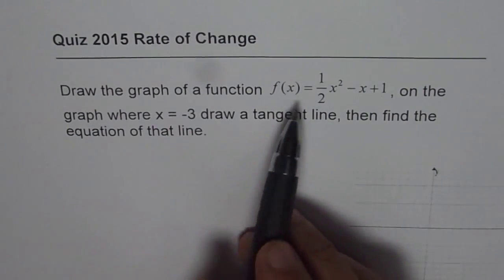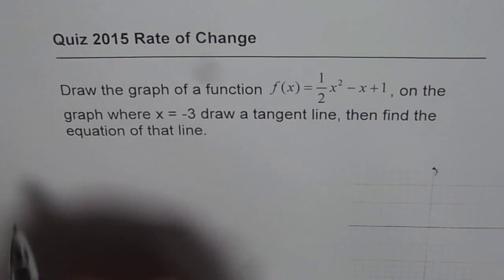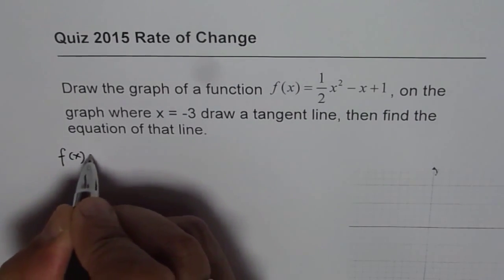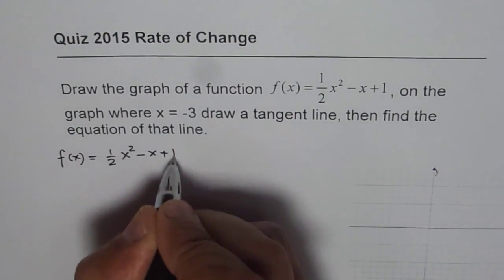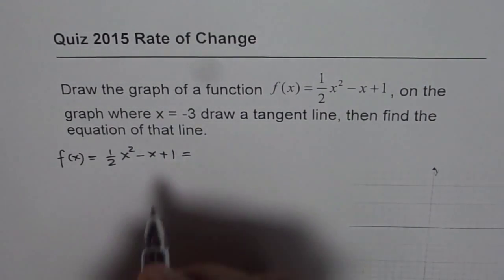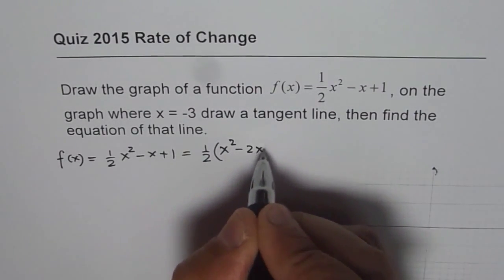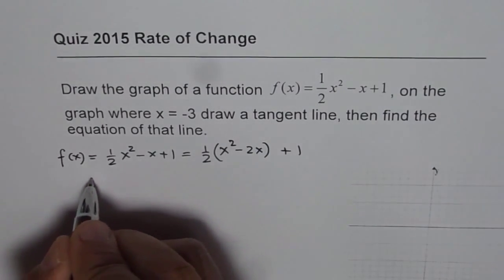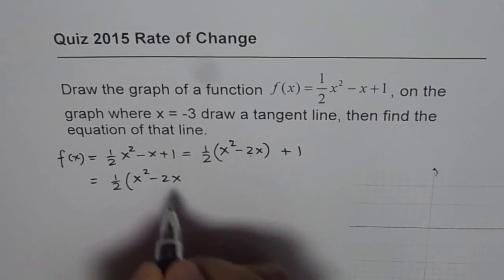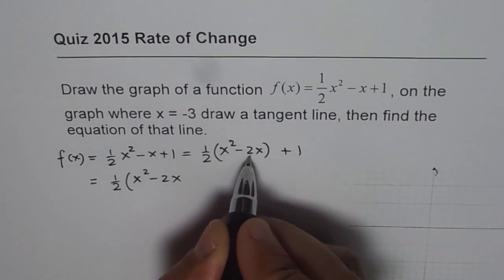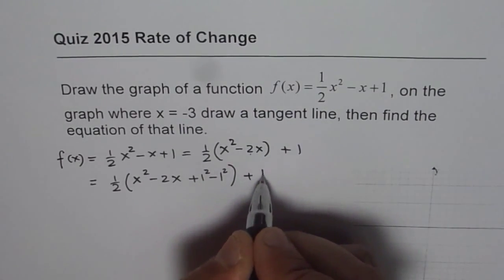Now you could draw this parabola using table of values, but a preferred method is to convert this into vertex form. So we are given equation as 1/2 x² minus x plus 1. Let us first convert this to vertex form. So we'll take 1/2 common. So we get x² minus 2x plus 1. That is the method of completing the squares. So we have x, half of this is 1. So we have minus 2x, add and separate half of this square, which is 1² minus 1² plus 1.